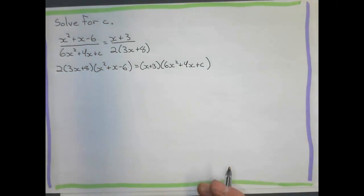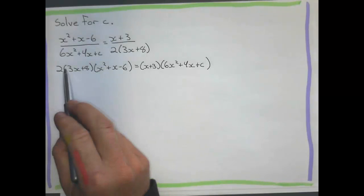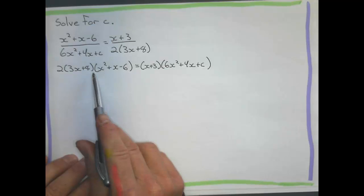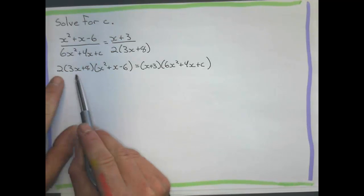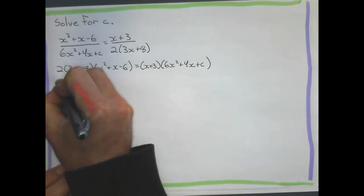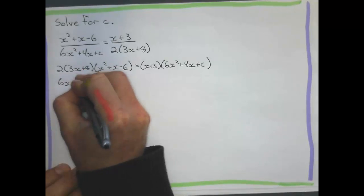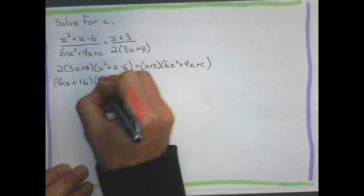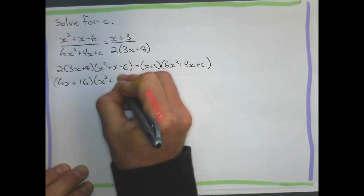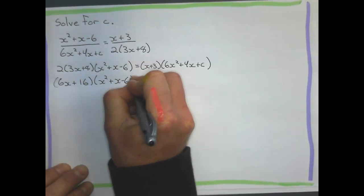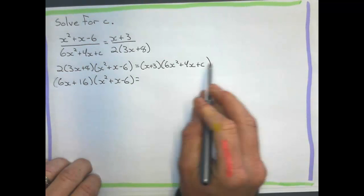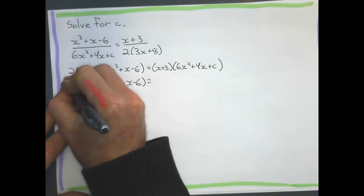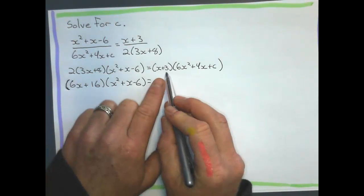All right. Next step, what I want to do is I want to expand. And this is a pretty big expanding problem. So I'll expand this one first, and I get 6x plus 16. And I'm going to put that in brackets because I'm going to multiply it by that x squared plus x minus 6. And this guy, I haven't done anything over here just yet, but I'll get there.